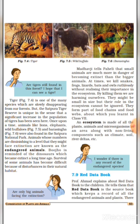Are only big animals facing extinction? Kya kewal bade jantoon ko hi vilupt hone ka khatra hai? Madhavji tells Paheli that small animals are much more in danger of becoming extinct than bigger animals. Bade jantoon ki apeksha chhote praniyon ke vilupt hone ki sambhavna adhik hoti hai. Aksar hain — saap, mendhak, chipkali, chamgadar tatha ullu ityadi ko nirdata se maar daala jaata hai. Paritantra mein unke mahatvapurn vishay mein sochna chahiye.